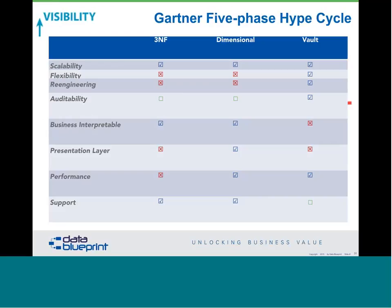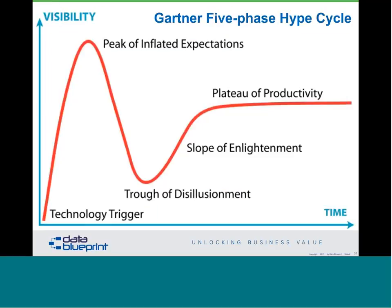Peter notes that he's been doing a lot of lectures on the post-big data era. He wants listeners to understand conceptually what's happening, using the Gartner five-phase hype cycle: starting with a technology trigger, rising to the peak of inflated expectations, going to the trough of disillusionment, climbing up the slope of enlightenment, and reaching the plateau of productivity — everybody starts off saying it's really great, then it really sucks, and then somewhere in the middle we find the answer.